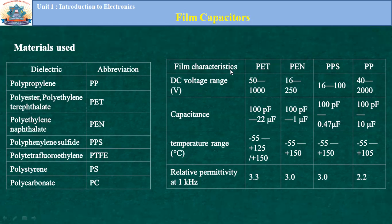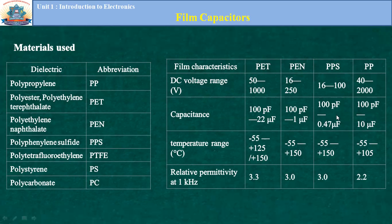Specifications for film capacitors: the DC operating voltage range for PET is 50 to 1000 V; PEN is 16 to 250 V; PPS is 16 to 100 V; and PP operates over a large range of 40 to 2000 V. Capacitance for PET is 100 pF to 22 µF; PEN is 100 pF to 1 µF; PPS is 100 pF to 0.47 µF; and PP is 100 pF to 10 µF. PET has the largest range while PPS has the smallest.